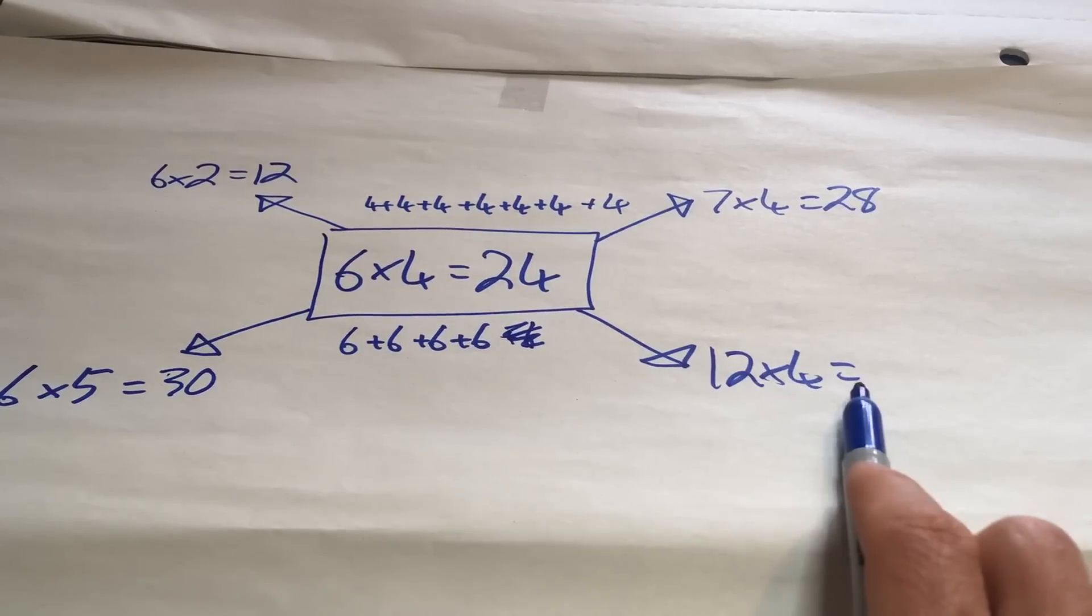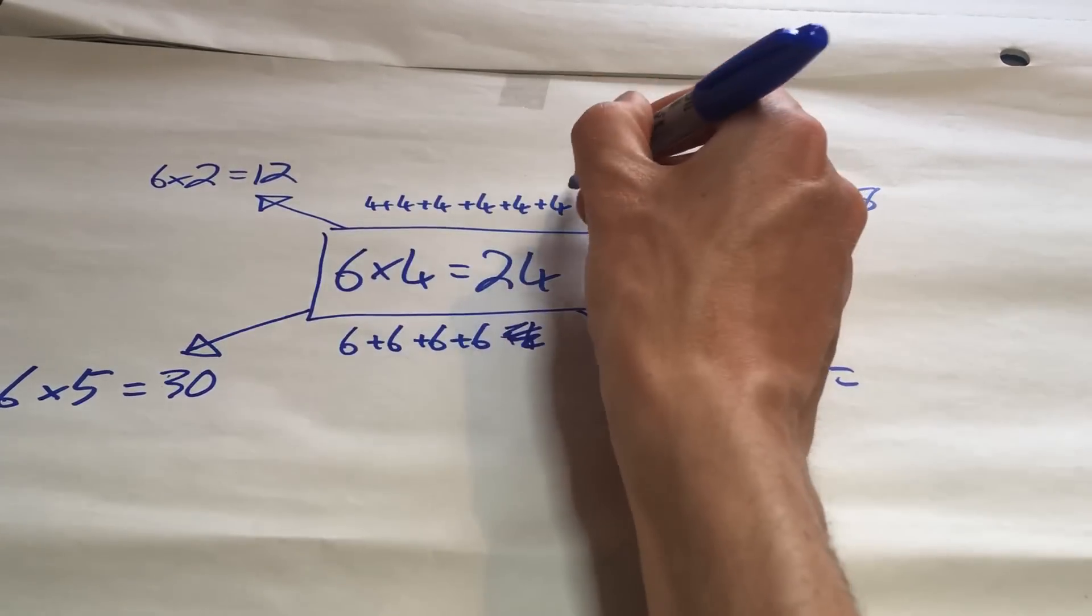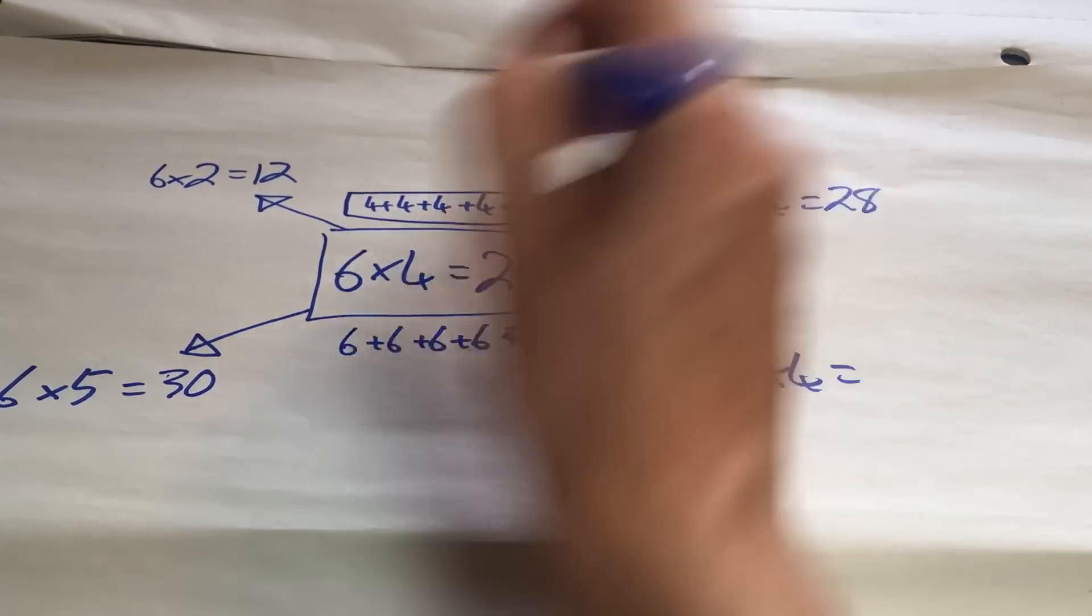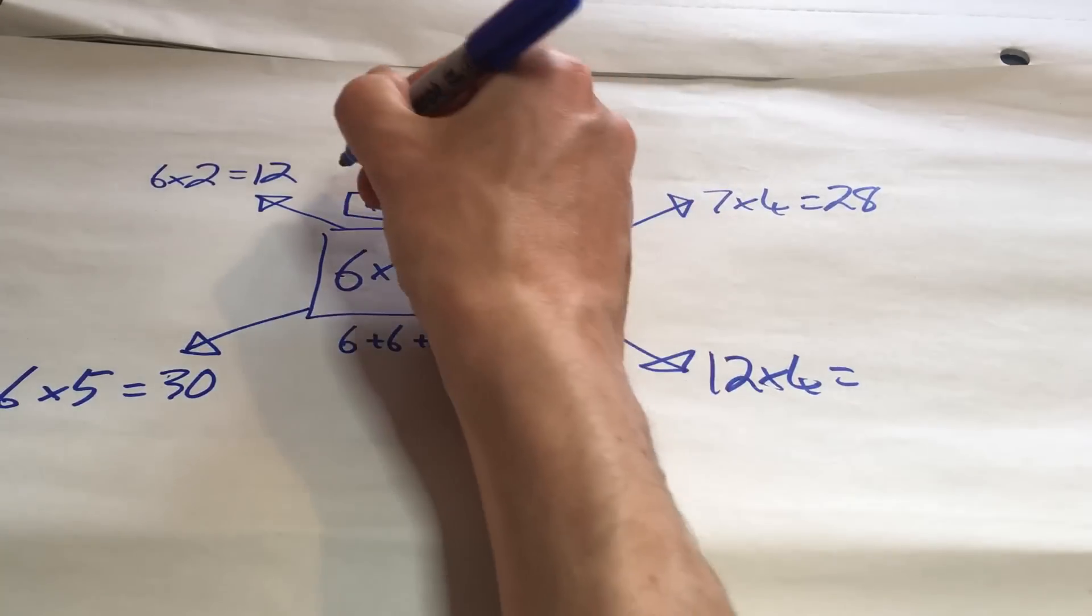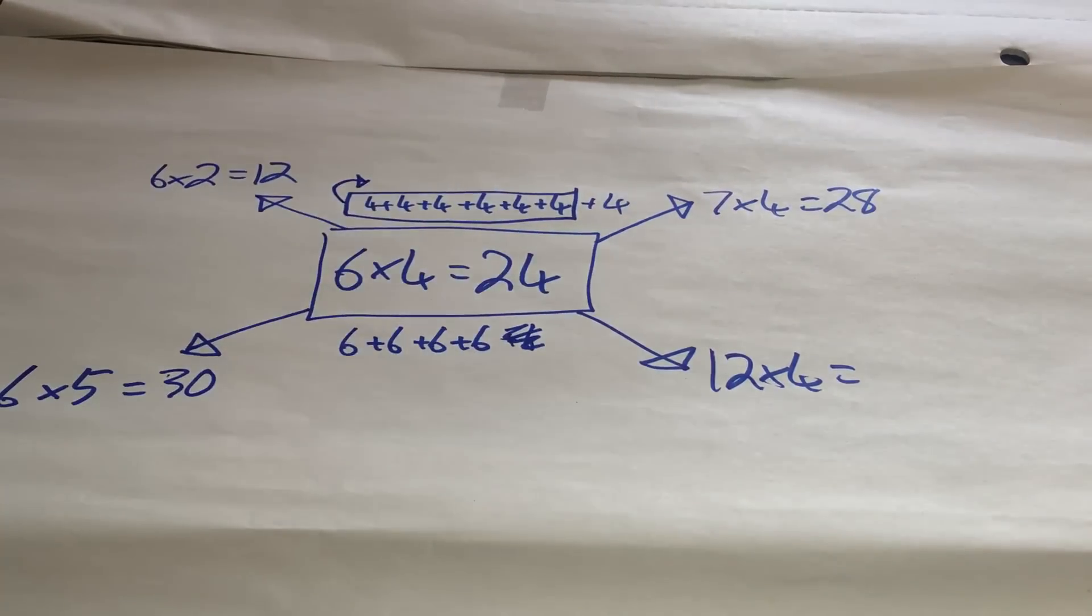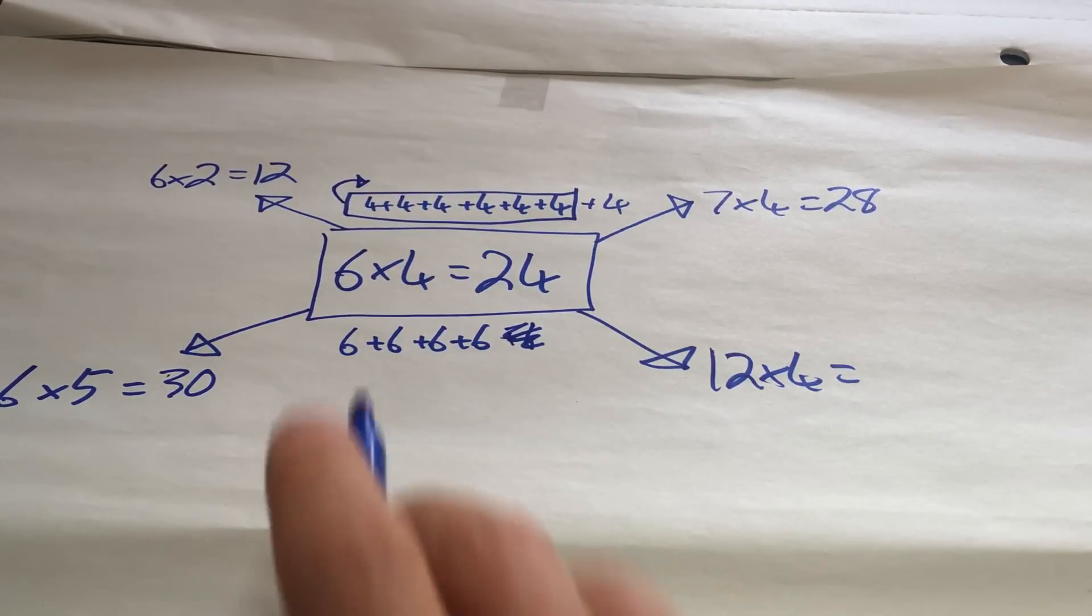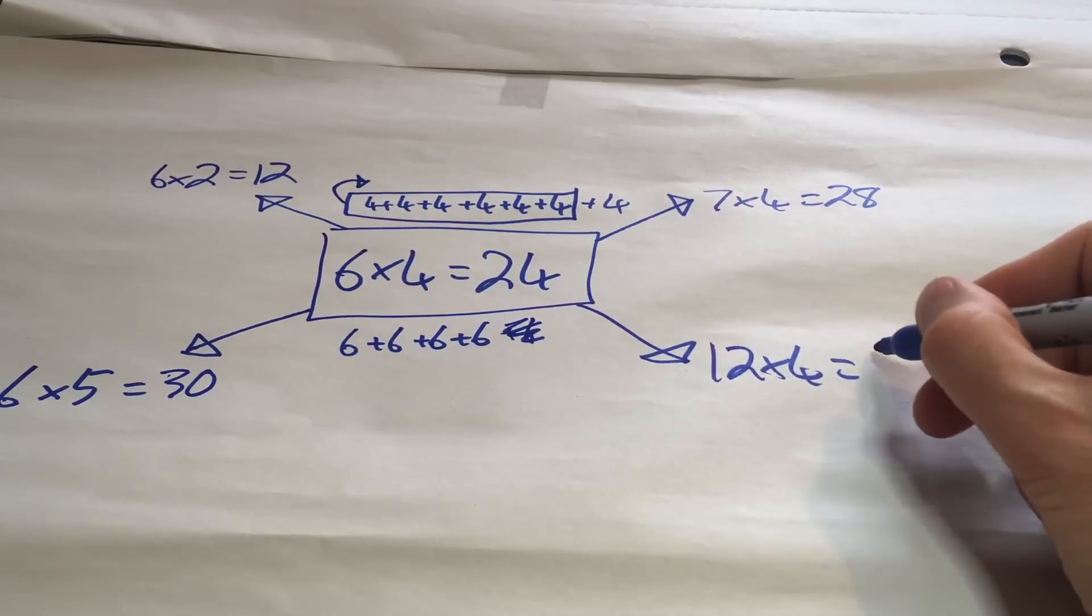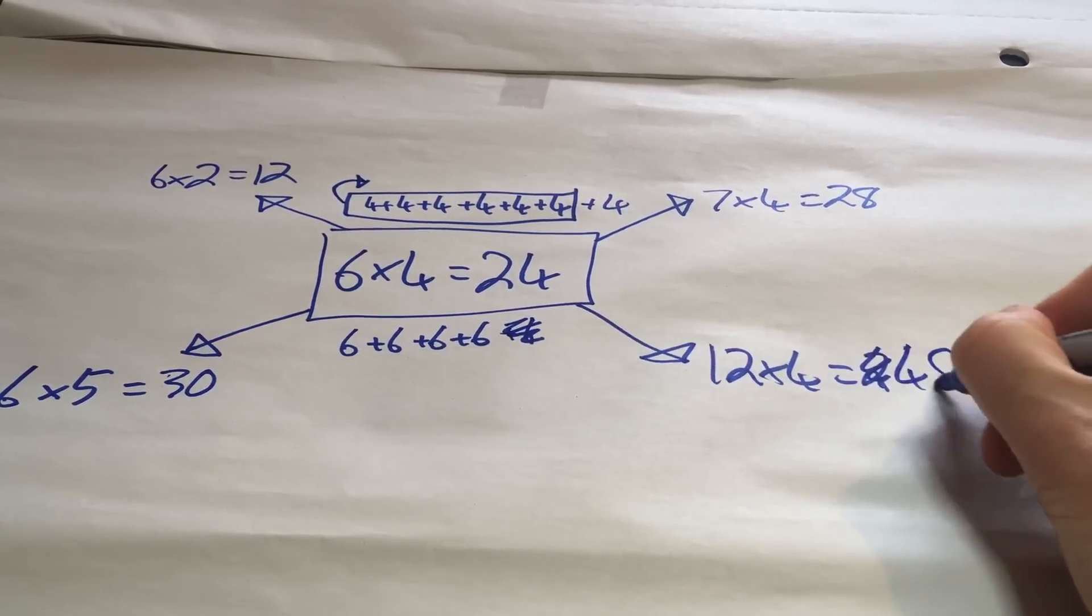And finally, well, 12 times 4, well, 6 lots of 4 here is 24. So, 12 lots of 4 will be this again. It will be double it. So, 6 4's are 24. 12 4's will be, oh, I'm sorry, 48.